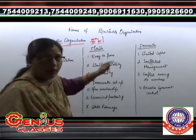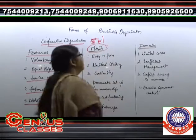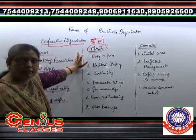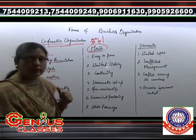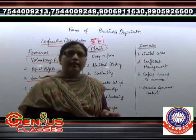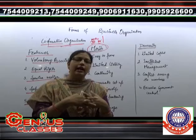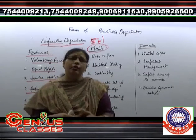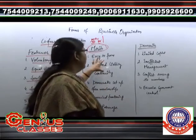Ab baat karte hain cooperative organization ki merits. Sabse pehle easy formation ki baat karte hain — these types of organizations are easily formed. Simple permission ho sakti hai — ham ten friends mein keh sakti hain mutual interest, mutual help karni ki tendency, plus common interest, then we go for the cooperative organization, we can form.